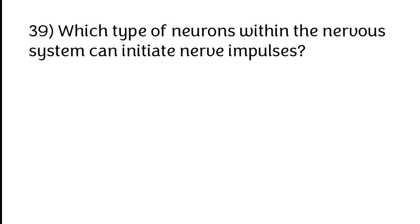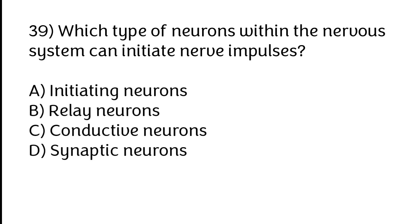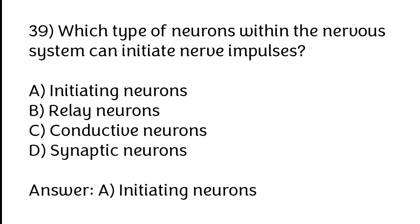Which type of neurons within the nervous system can initiate nerve impulses? Options: A) Initiating neurons, B) Relay neurons, C) Conductive neurons, D) Synaptic neurons. The correct answer is option A, initiating neurons.